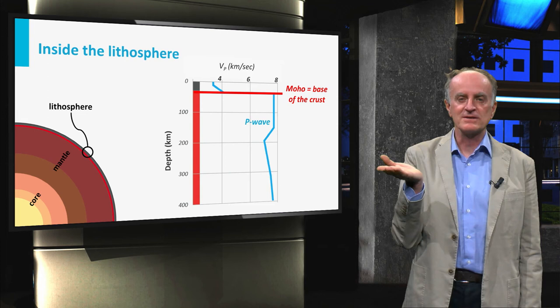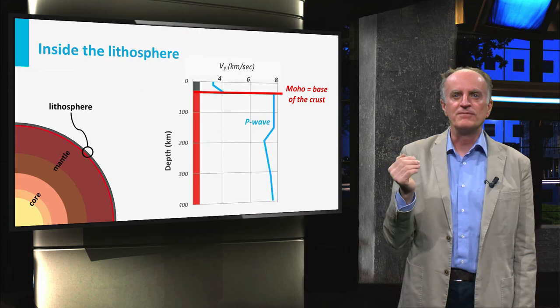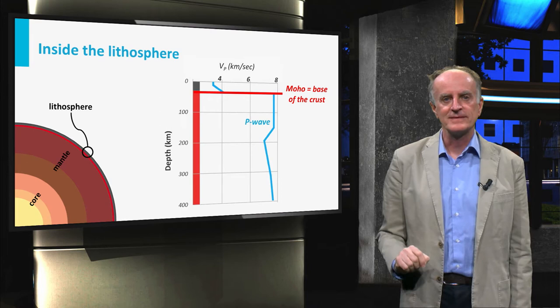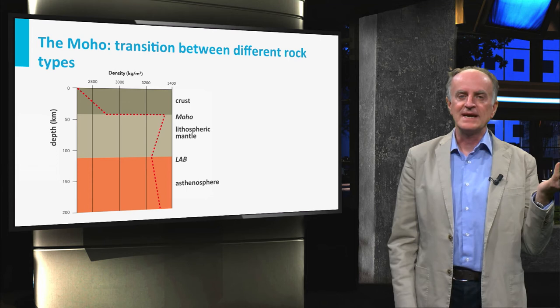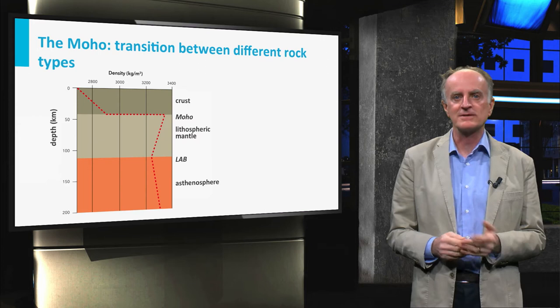Velocity changes across the MOHO are of 30 to 50% and occur over very short distances. We know quite a lot about the MOHO. In some regions, like northwest Italy and Oman, old MOHO surfaces and adjacent rocks are exposed at the surface where they can be examined.